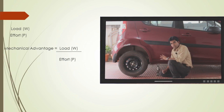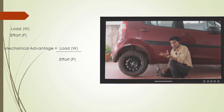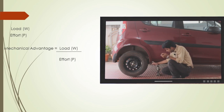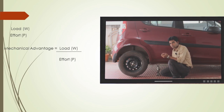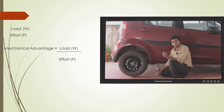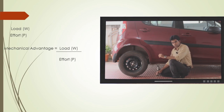The weight of the car which is to be lifted is known as the load, which we generally denote by W. The force which I am applying on this lever is nothing but the effort, which we generally denote by P. The ratio of this load to effort is nothing but the mechanical advantage — the ratio of load W to effort P gives us the mechanical advantage.